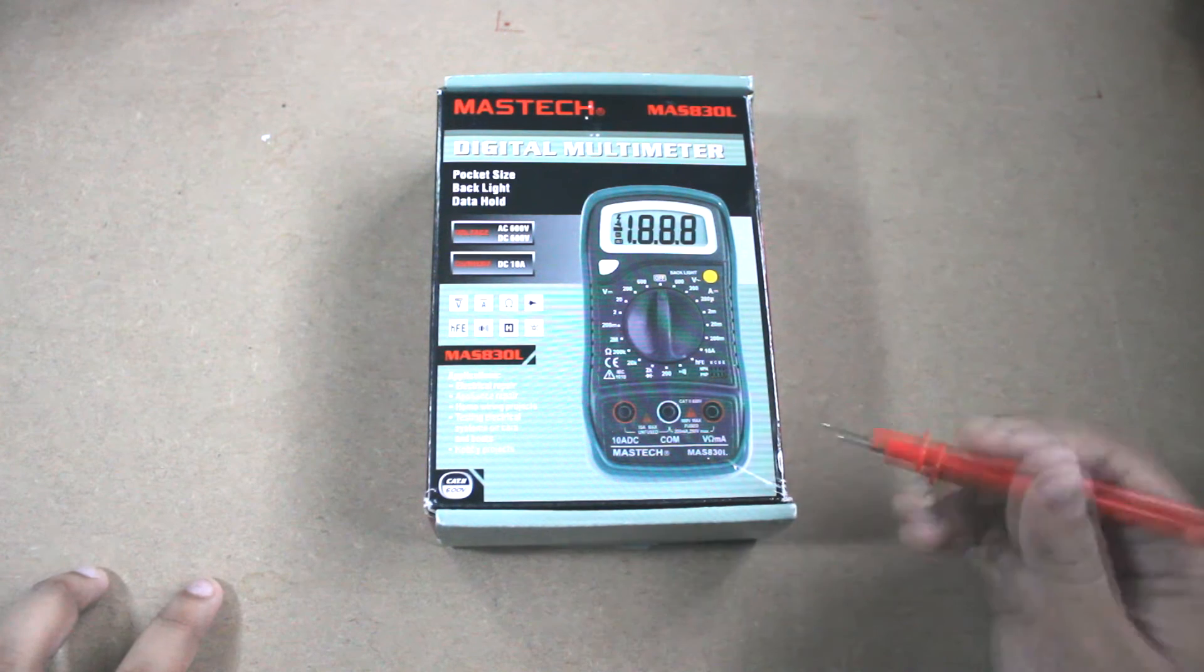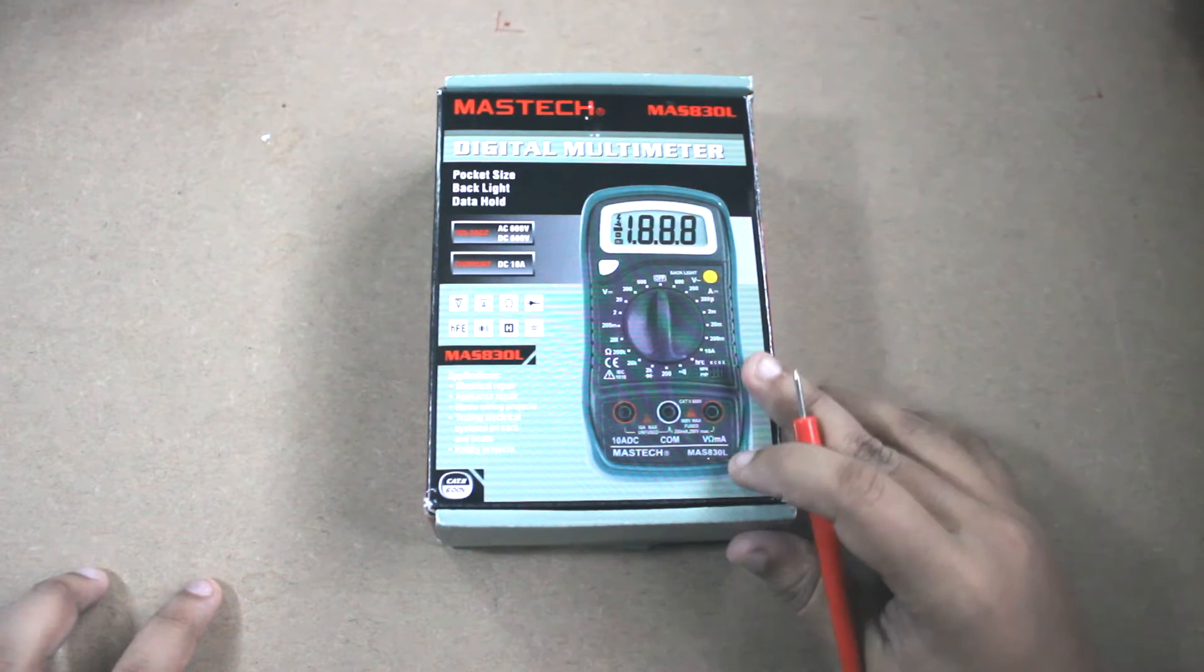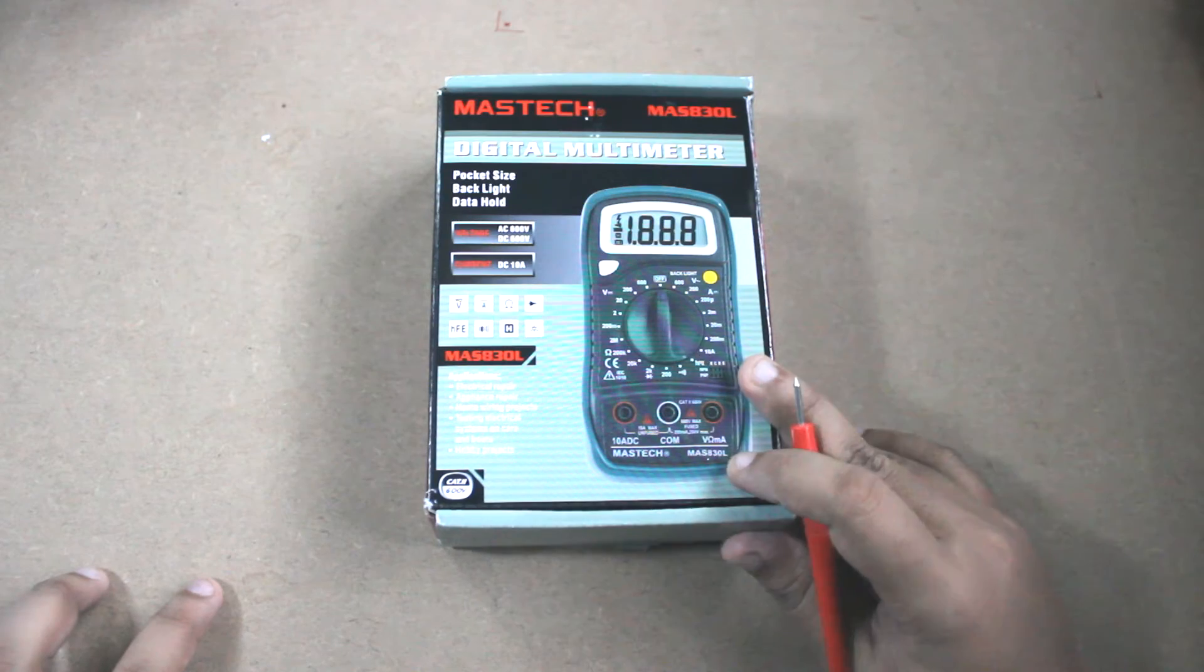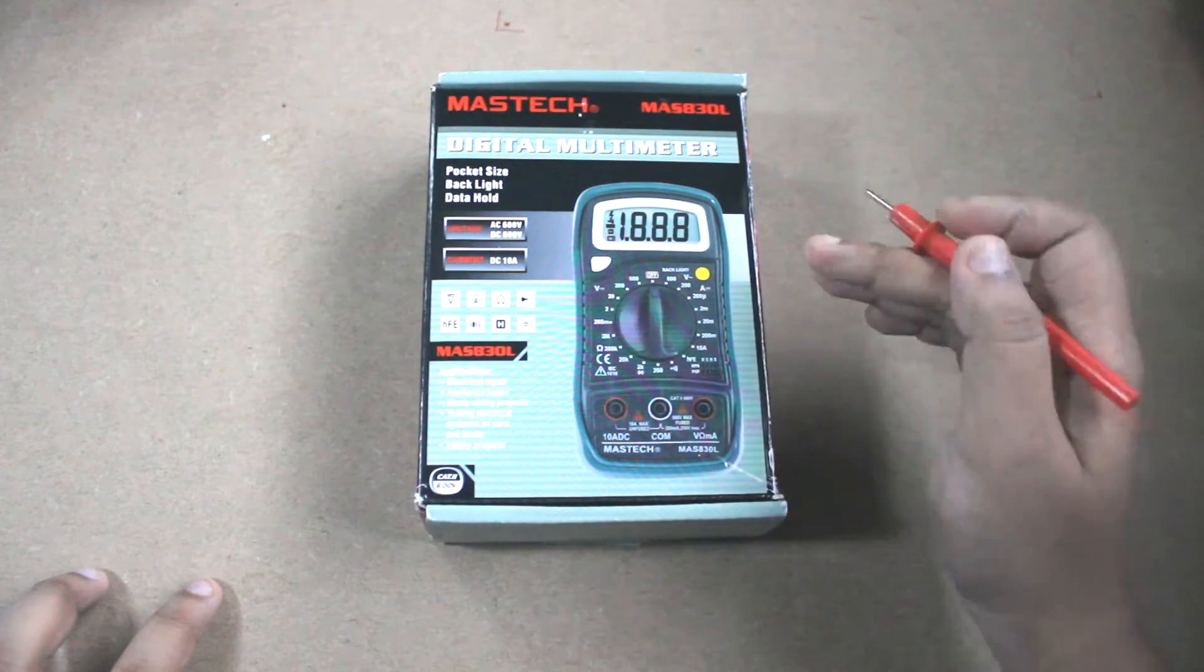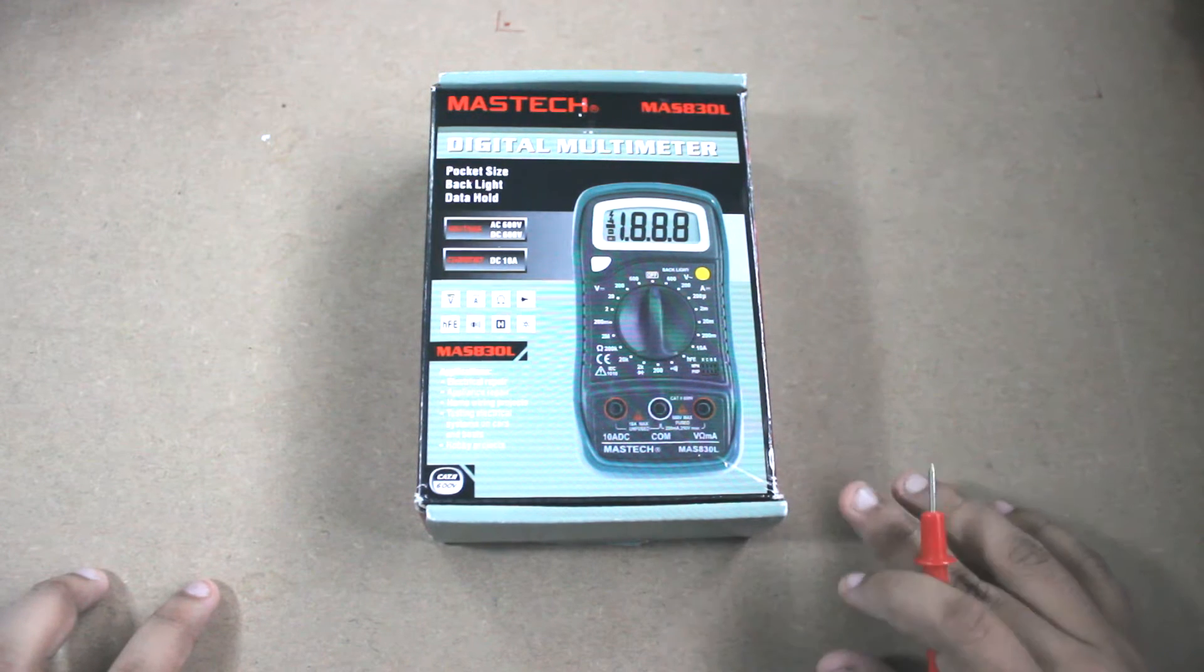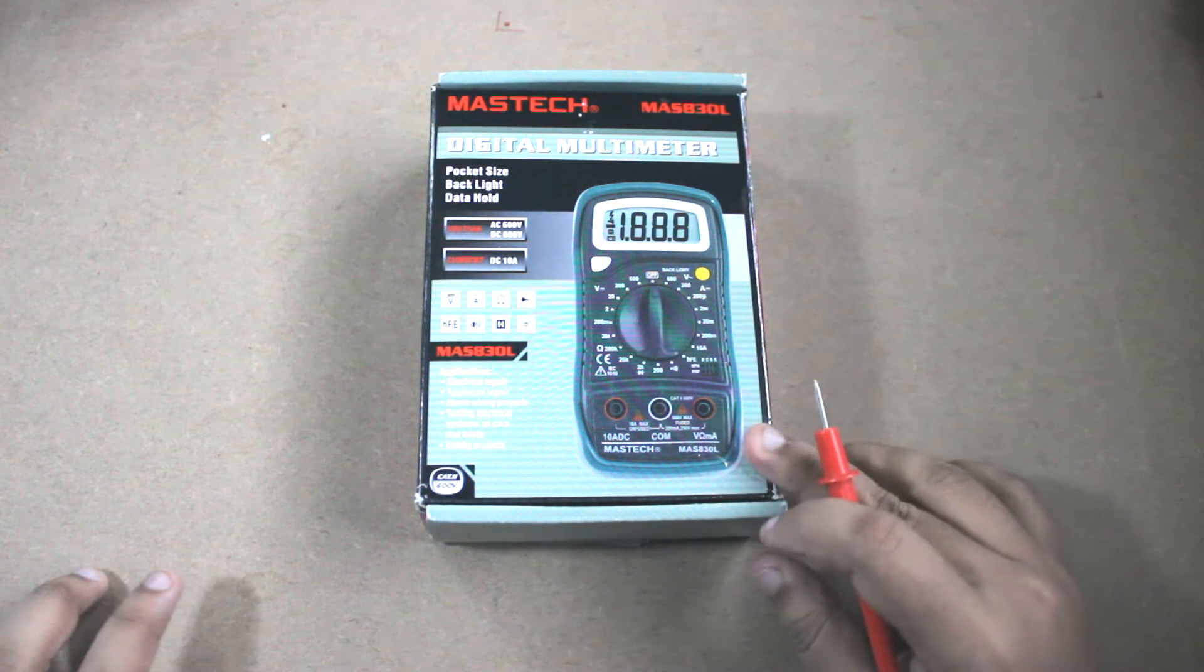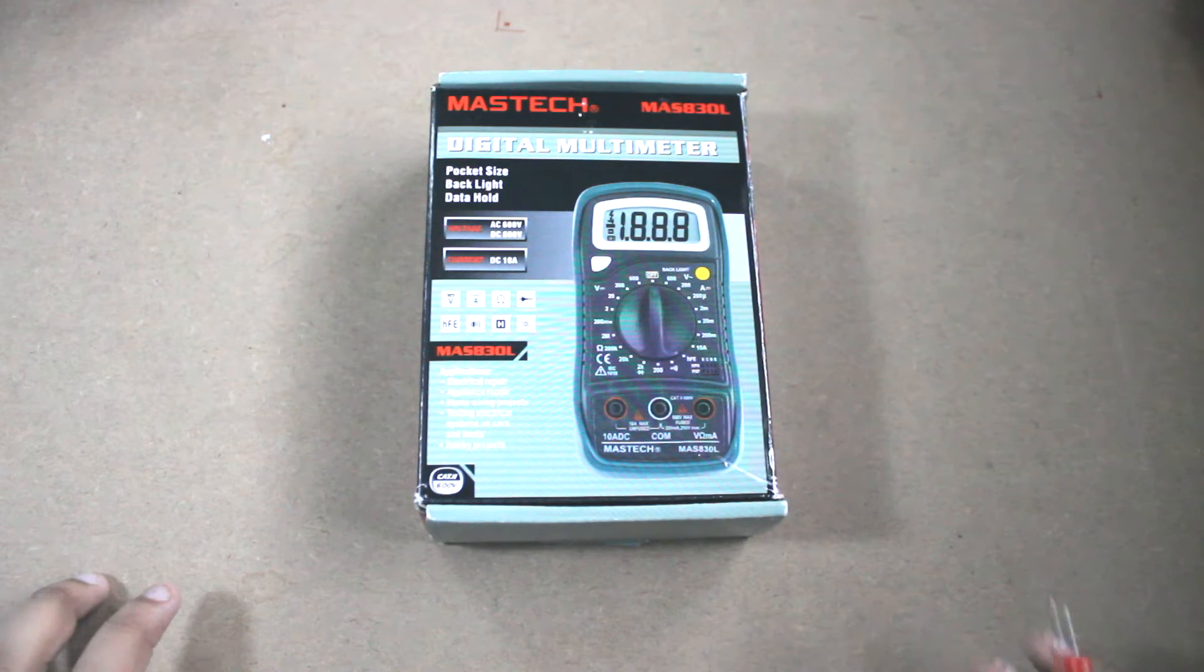I will be doing the unboxing of this in this video. This is a three and a half digit digital multimeter from Mastek, an entry-level multimeter. So without much delay, let's try to unbox this, but let me tell you I have bought it from local market and they have checked it, so the seal is broken.